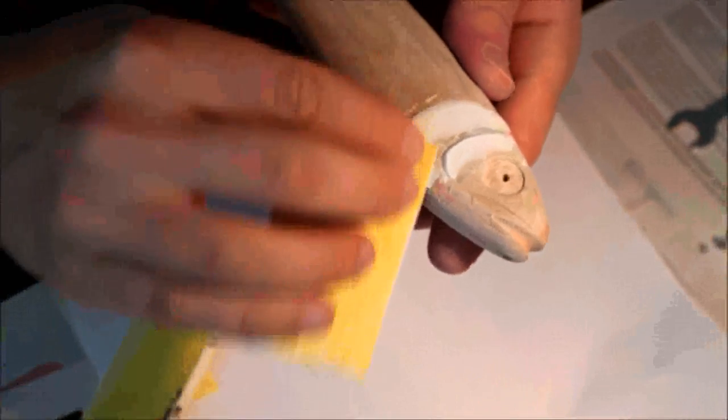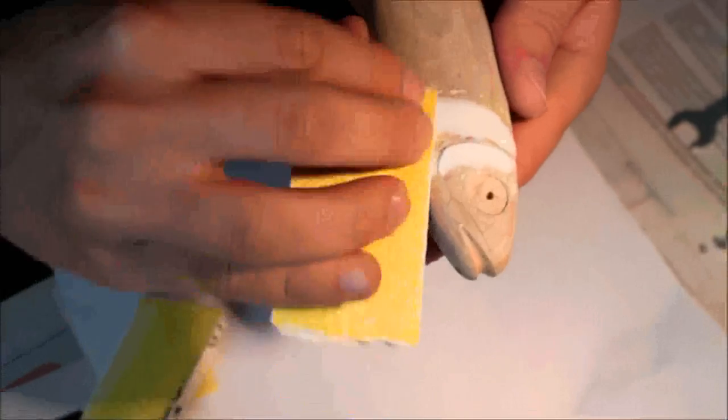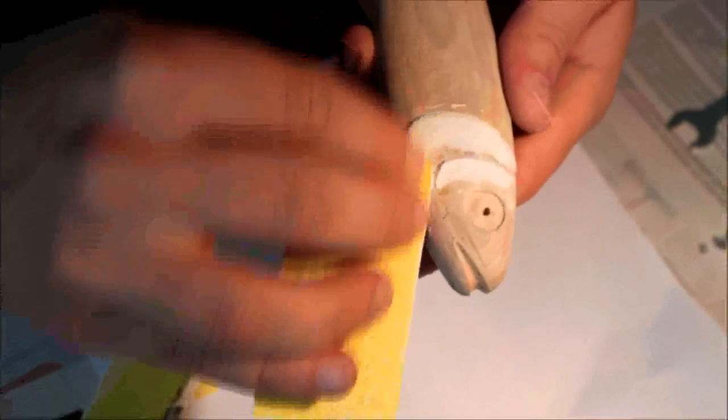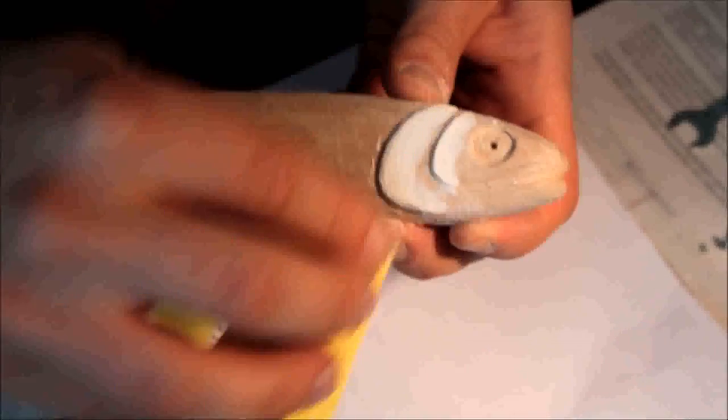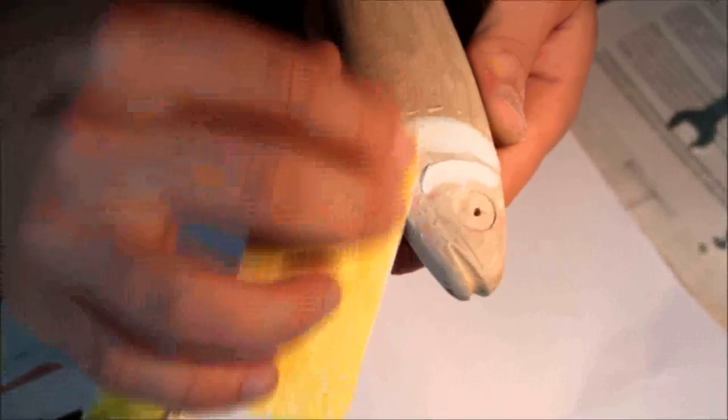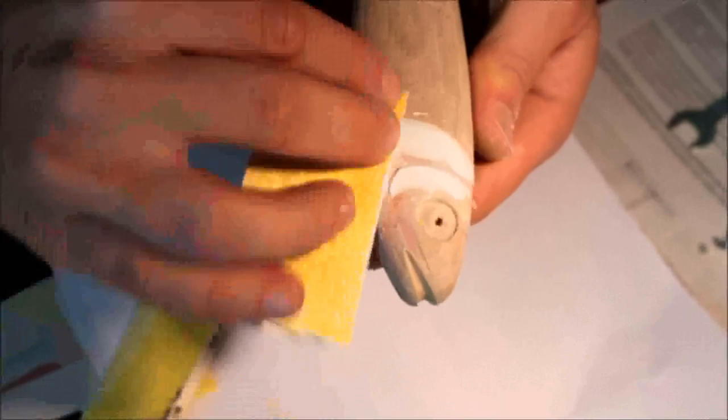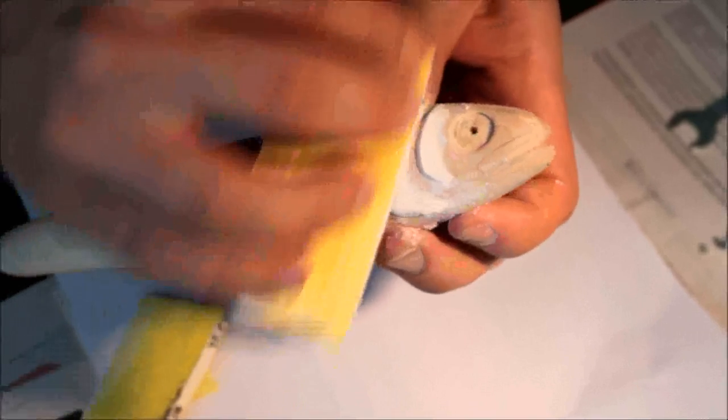Now that I've done the rough sanding, I'm going to start to do the final touches on the gill plates. Usually the sort of sanding paper that I use is grid 60, but I think it's doable with an 80 or even 100.